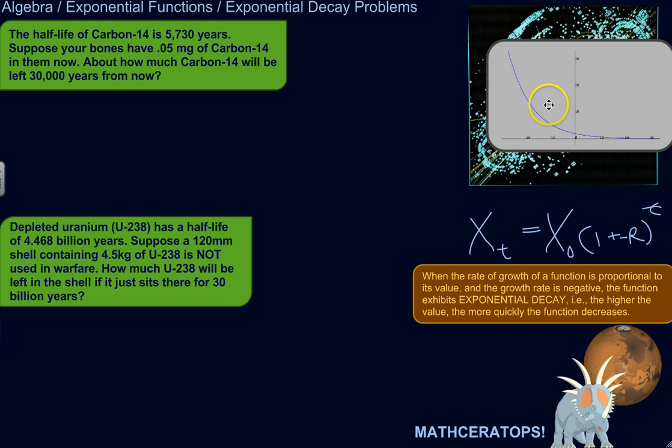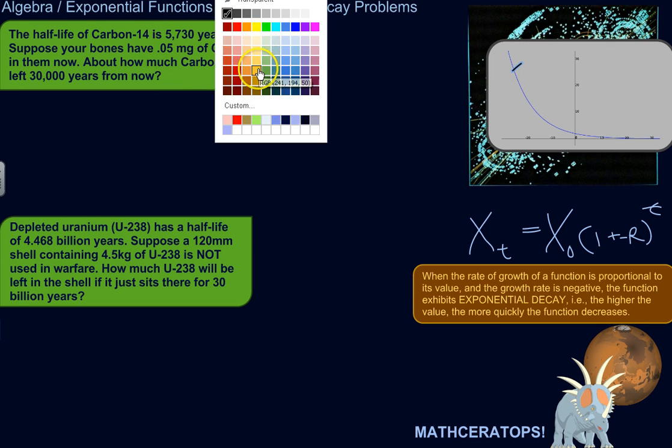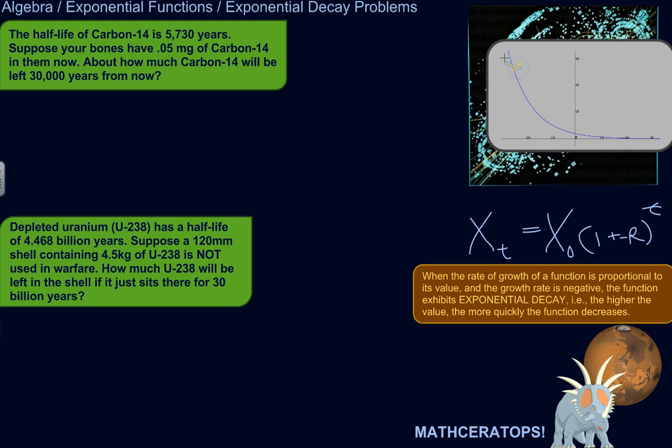Basically, what's happening here is the higher the value of the function, the more quickly it's decreasing. So here, there's a very steep negative slope. The value is decreasing very quickly. Here, where the value of the function is lower, the slope is kind of evening out a little bit. It's still a negative slope, it's still decreasing, but it's not decreasing as quickly.